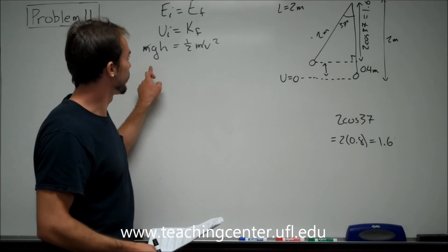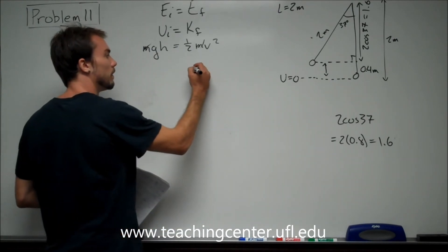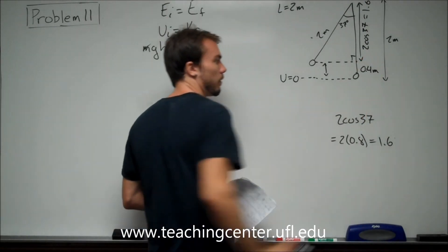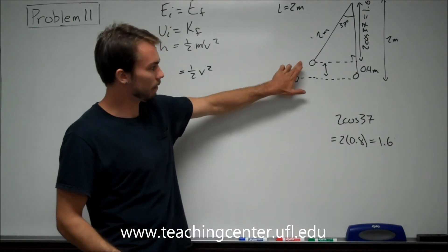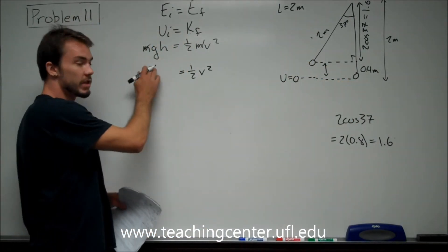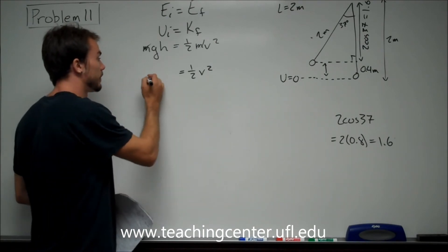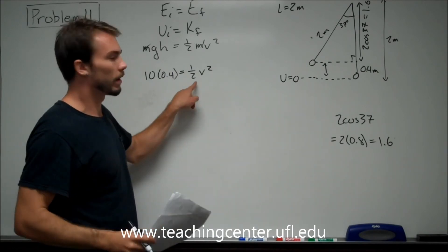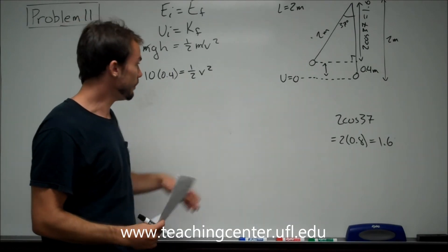Now with that in mind, what we can do is we can say 1/2 of our V squared is going to be equal to our H, we said was going to be 0.4. That's how high it starts out above where it ends. And G, they told us to use as 10. So we're going to say this is 10 times 0.4 is equal to 1/2 of V squared.